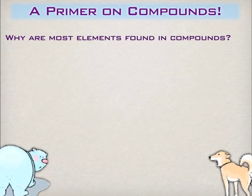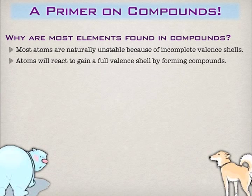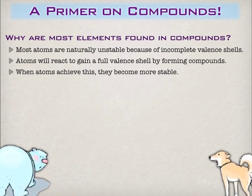Things make compounds to become stable. In fact, if you fall asleep in chemistry class and someone calls on you and you wake up with no idea what the question is, just blurt out stability — because probably you're right. Atoms are reacting to get full valence shells. Most atoms start with incomplete valence shells, and they become stable when they get that full outer shell, either by gaining, losing, or sharing electrons.